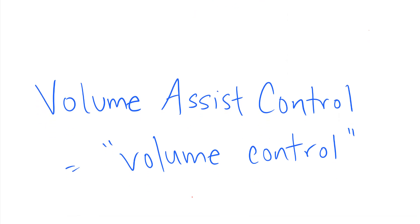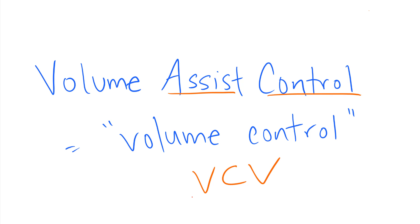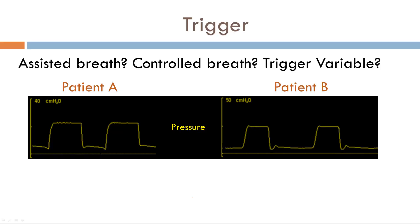The same goes for volume assist control ventilation, or volume control (VCV). A lot of information is in the name: volume assist control ventilation has both assisted breaths and controlled breaths. The trigger variables are either pressure or flow for assisted breaths, and time for controlled breaths.